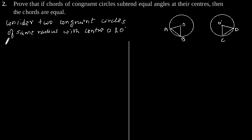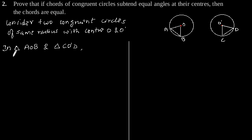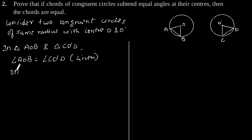Now, in triangle AOB and triangle CO'D: angle AOB is equal to angle CO'D, as given in the question. And OA is equal to O'C, since they are the radii of congruent circles.